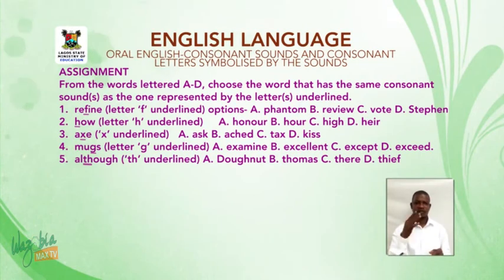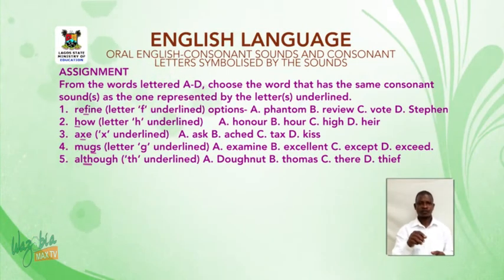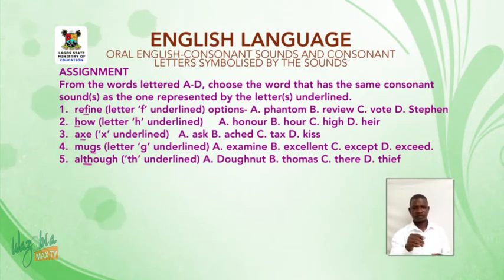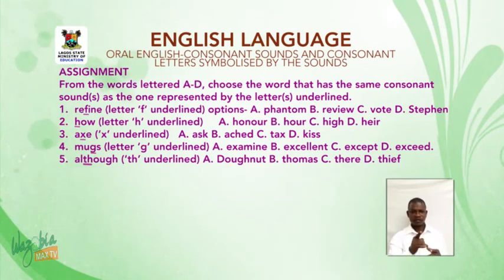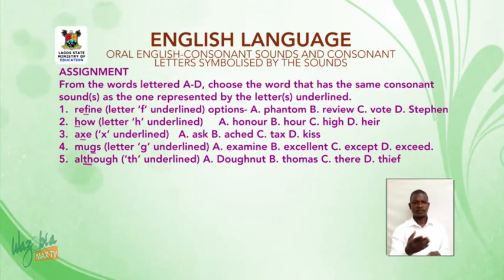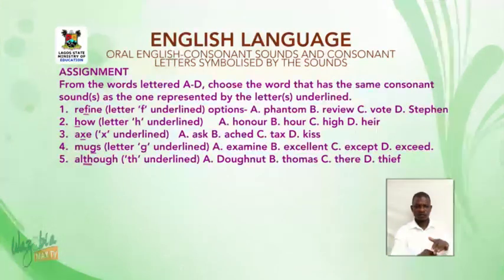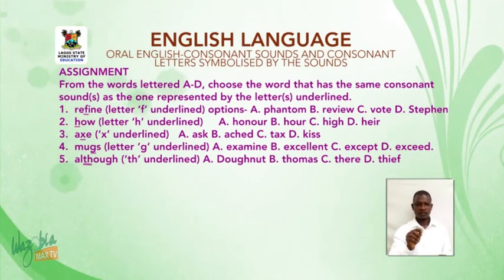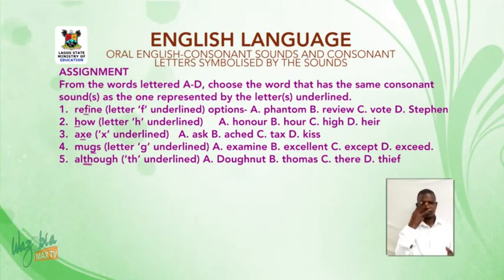Number four: mugs, letter G underlined. Options: A. Examine, B. Excellent, C. Accept, D. Exceed. Number five: although, CH underlined. Options: A. Donuts, B. Thomas, C. Ver, D. Fifth.